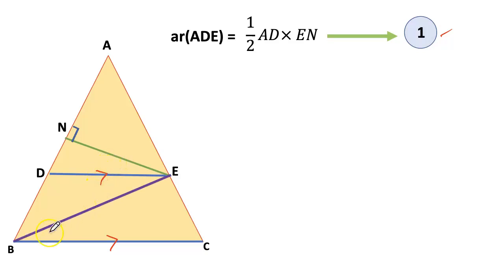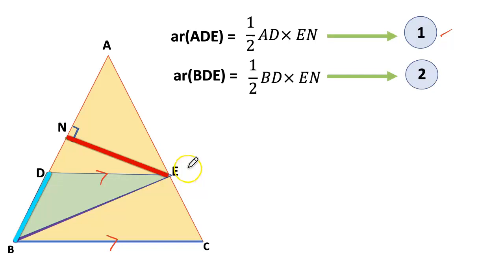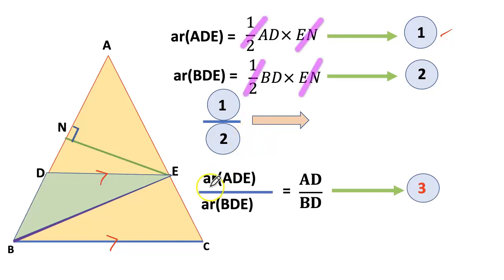Now, join BE. We can see the triangle BDE. Here, area of BDE equals half into base BD into EN. Now, divide equation one by two. So area of ADE by area of BDE equals AD divided by BD, call equation number three.